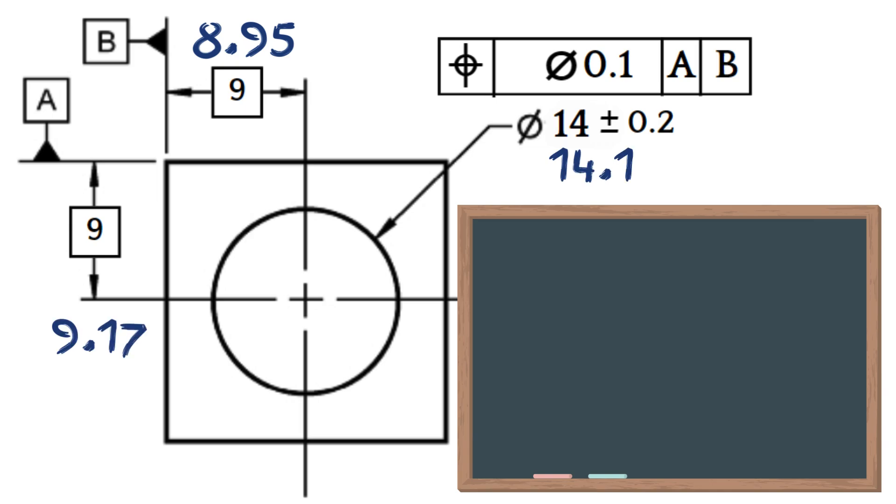Now we have the same part with a drawing using a position tolerance, calling for a maximum position deviation of 0.1mm. To check if the part is okay, we need to calculate the position deviation using the position formula.